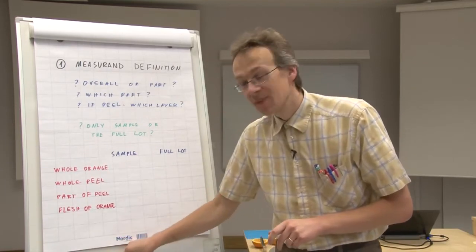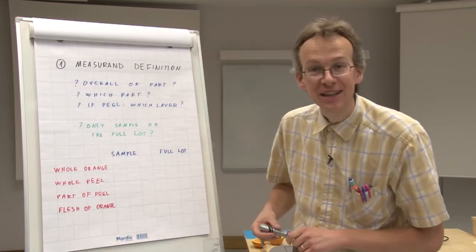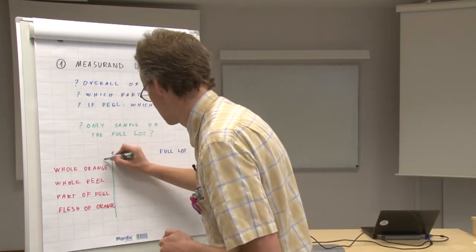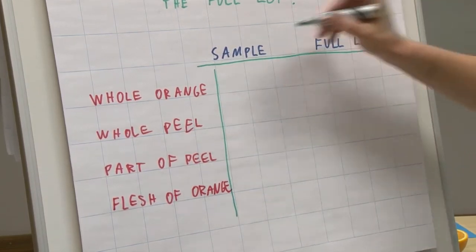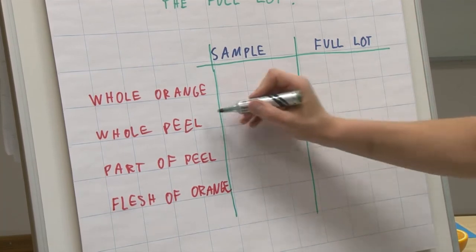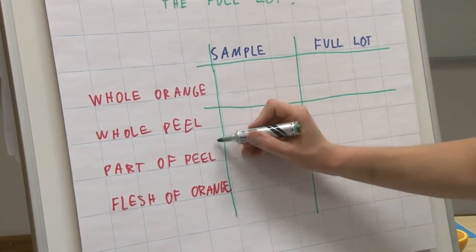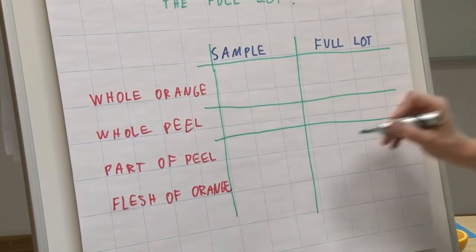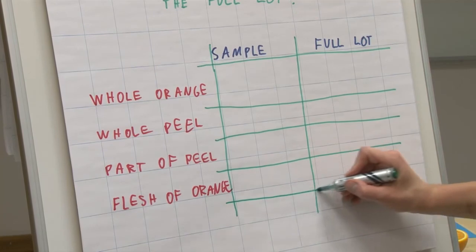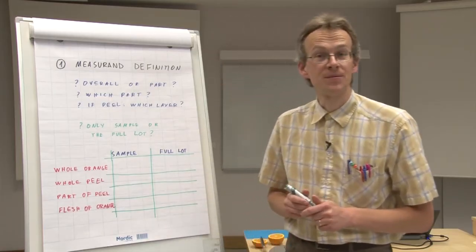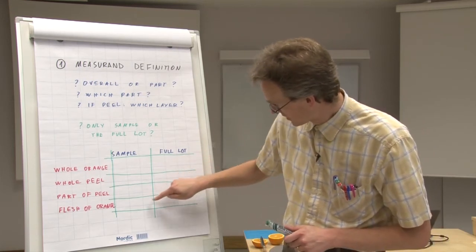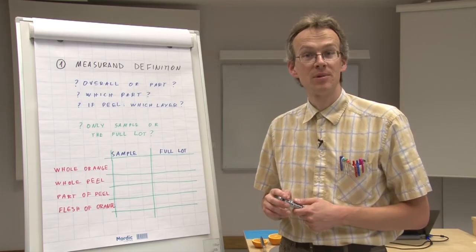So we see that we now have a matrix of eight different possibilities, and the measurand definition must clearly say into which of these eight slots we aim to get.